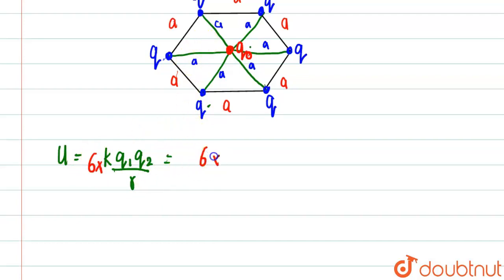That means what? If we multiply this by 6 we will basically get the total energy due to all 6 charges. That means this will come out to be 6 into K into Q0 which is Q1 into Q divided by R which is A. So this will come out to be 6KQQ0 divided by A.